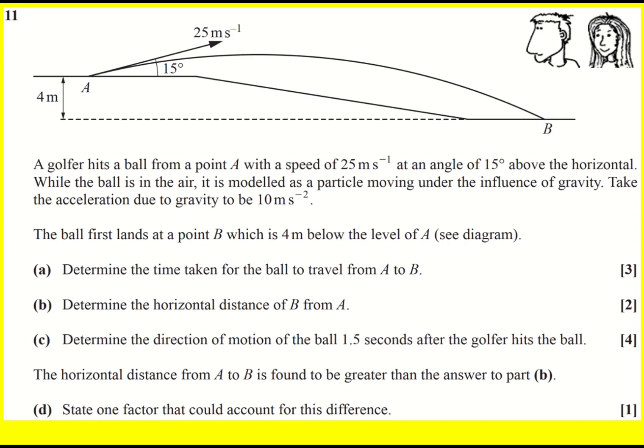We have a projectile motion question here. A ball has been hit from A to B, 25 meters per second, at an angle of 15 degrees above the horizontal. The model's a particle with just gravity going on, 10 meters per second squared. That's a slight variation to normal because normally we take it to be 9.8. And the other variation is that instead of it going up on level ground, it's ultimately going down by four meters.